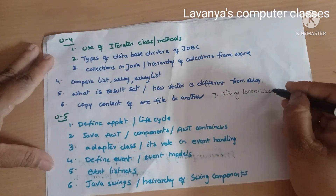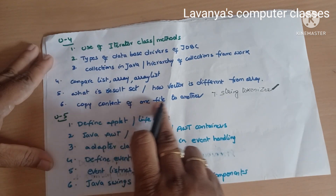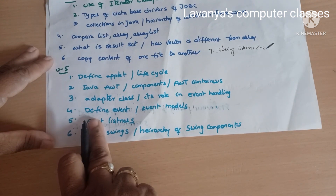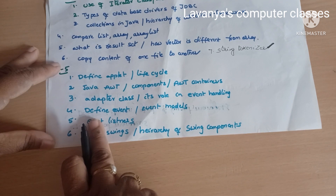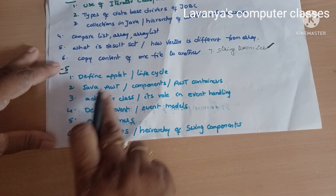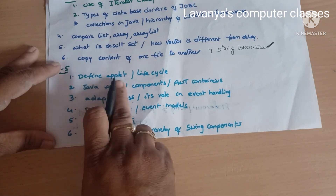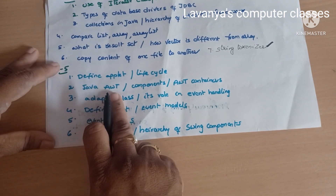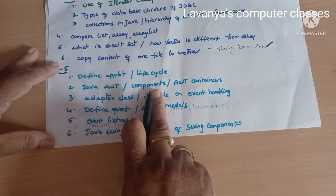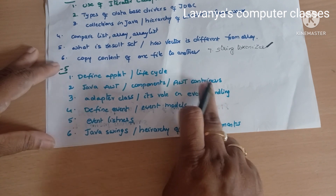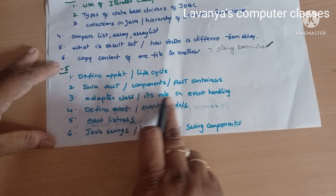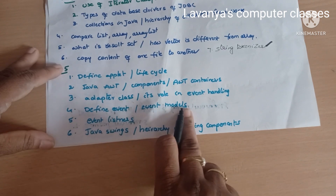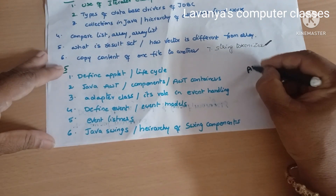Also important: string tokenizer, copying content from one file to another using file programming. In Unit 5, important topics are applets, listeners, event managers, Swings, and AWT. Key questions include: what is the life cycle of an applet with an example program, AWT components and containers, adapter classes, and event handling — event handling is a very important question.